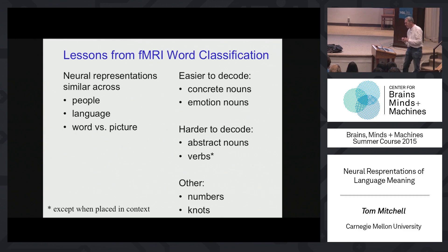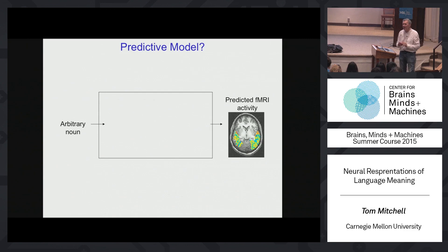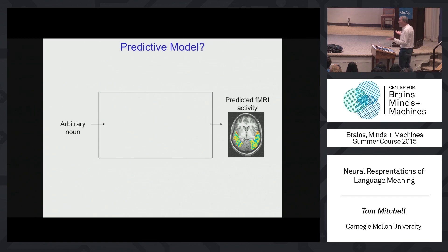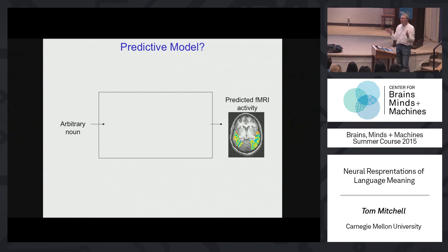We were quite pleased, but in the back of our mind was a gnawing question: having trained on a couple hundred words, we have a list of neural codes for a couple hundred words — but that's not really a theory of neural encodings of meaning, it's a list. What would it mean to have a theory? Scientific theories are logical systems that can make predictions. In our case, it would be nice to have a theory where we could input an arbitrary noun and get a prediction of what the neural representation for that noun would be — that would be a generative theory or model.